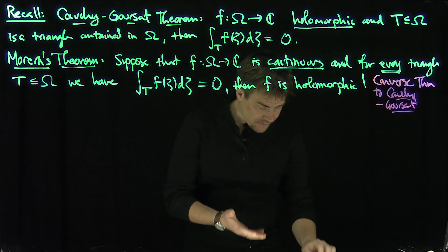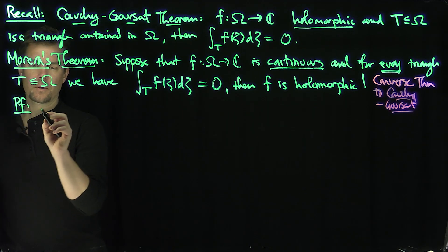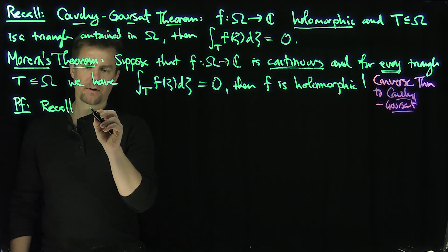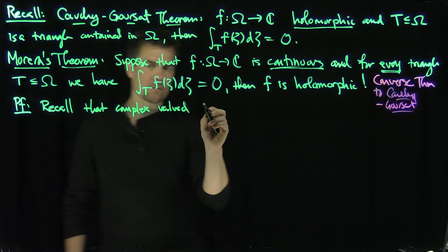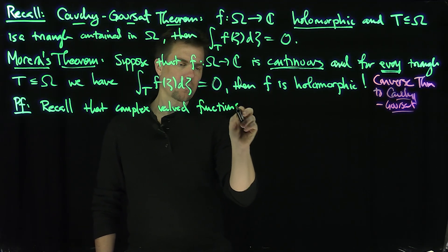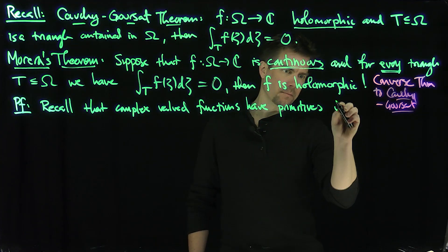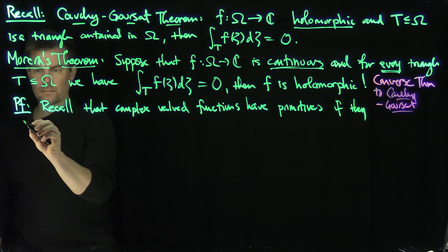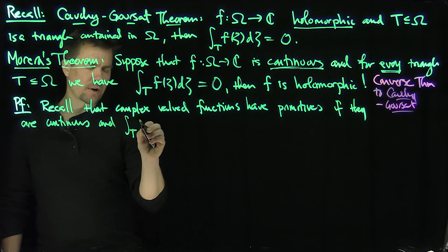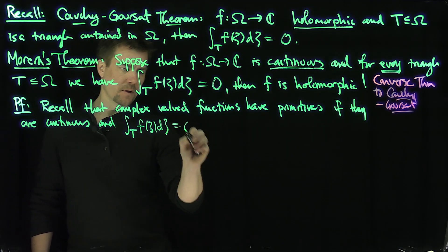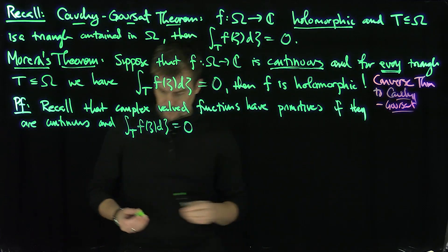How do we prove it? The proof is actually something we've already proven in some sense — and that's the beautiful thing about complex analysis. Recall that complex-valued functions have primitives if they're continuous and the integral over any triangle of f(ζ) dζ is equal to zero. We proved this already in a previous video. The mechanism of proof was the following — let's draw it, and we'll do a couple of examples of Morera.